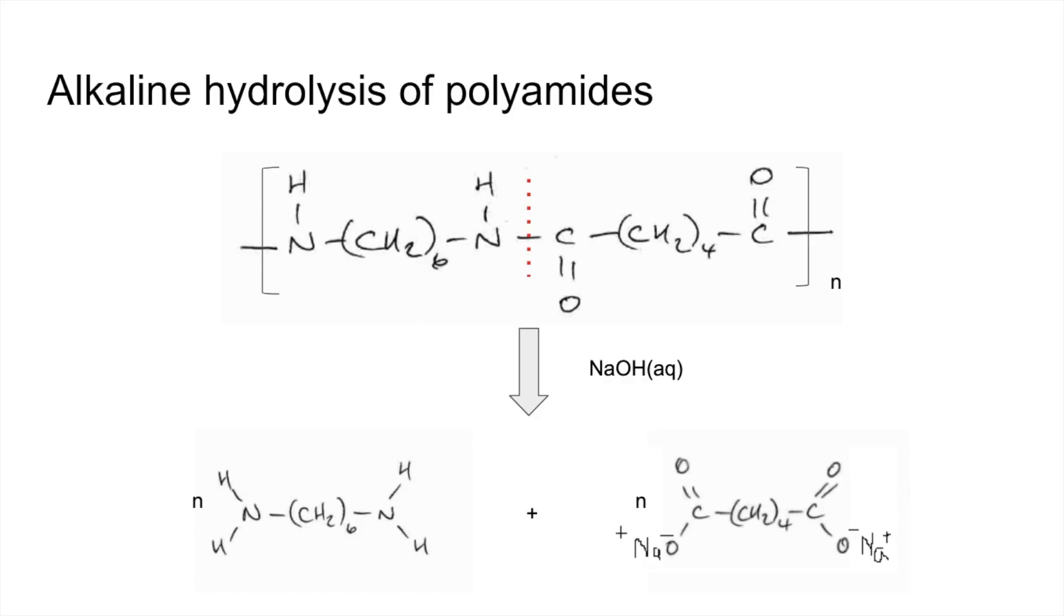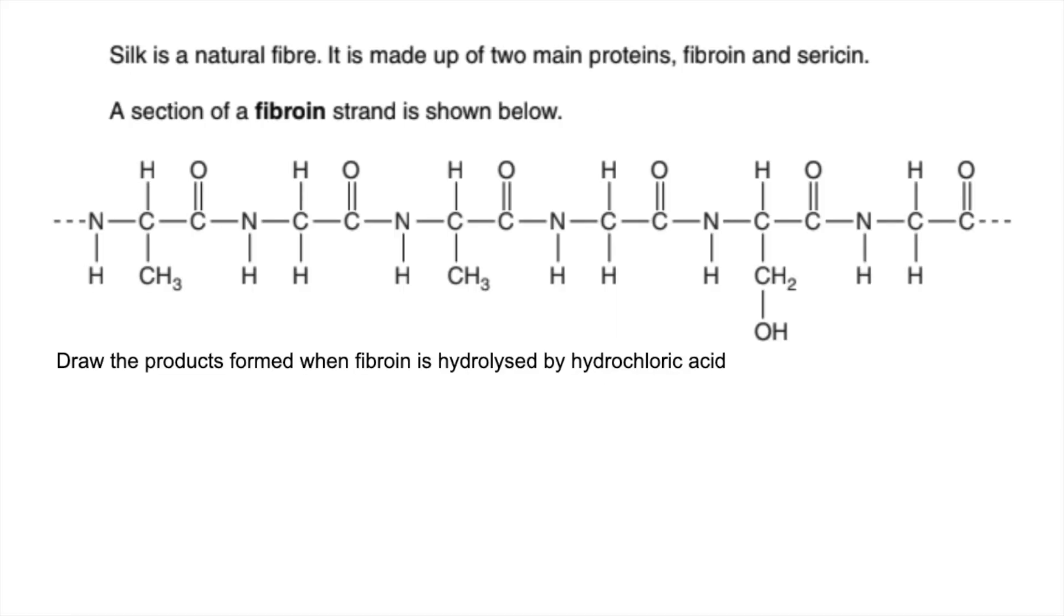So no matter how complicated your polyester or polyamide is, you do exactly the same. Break the bond that's joining them together, form the original monomers, and then ask yourself: can the acid or alkaline conditions react with any of those products? Basically just do what we've just done there.